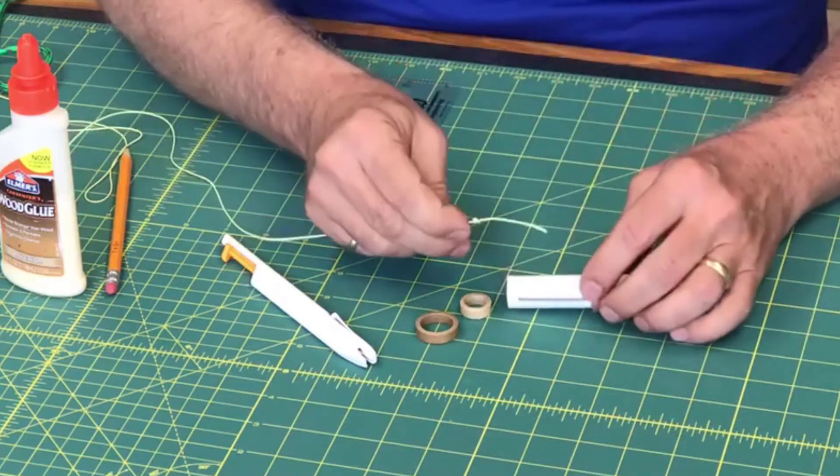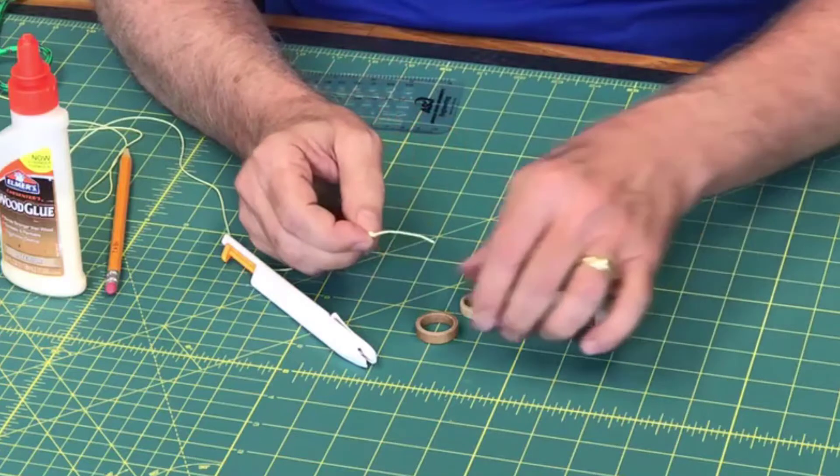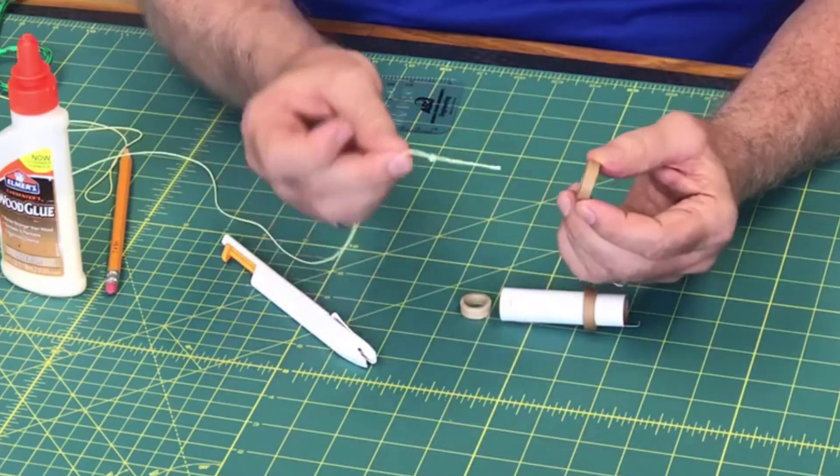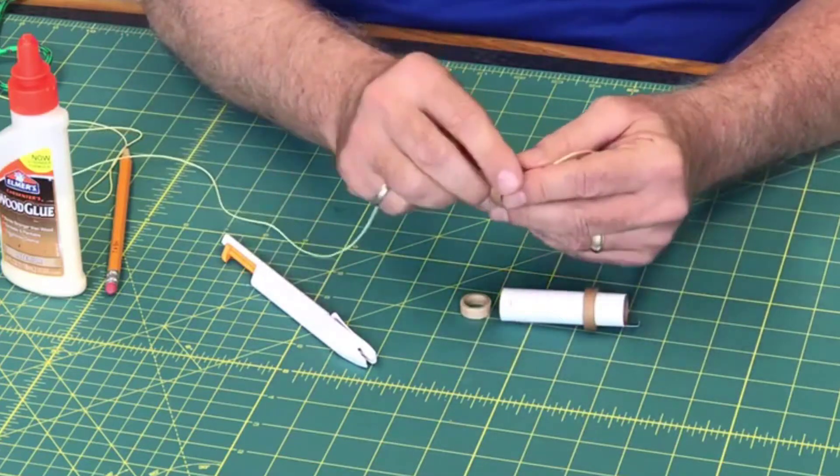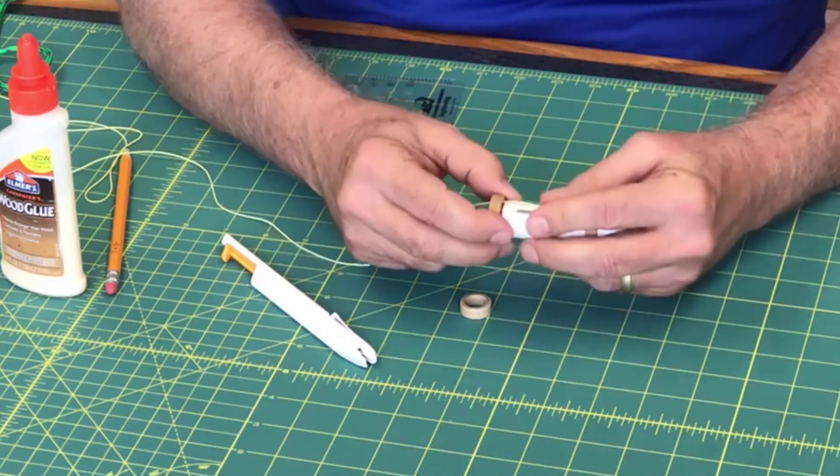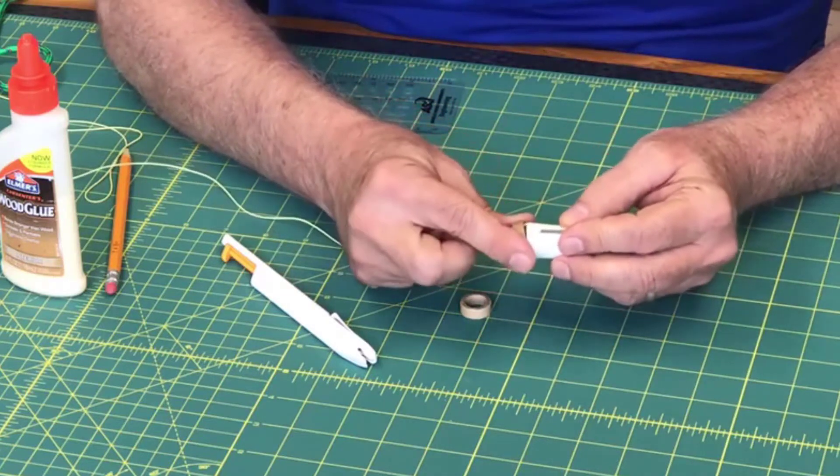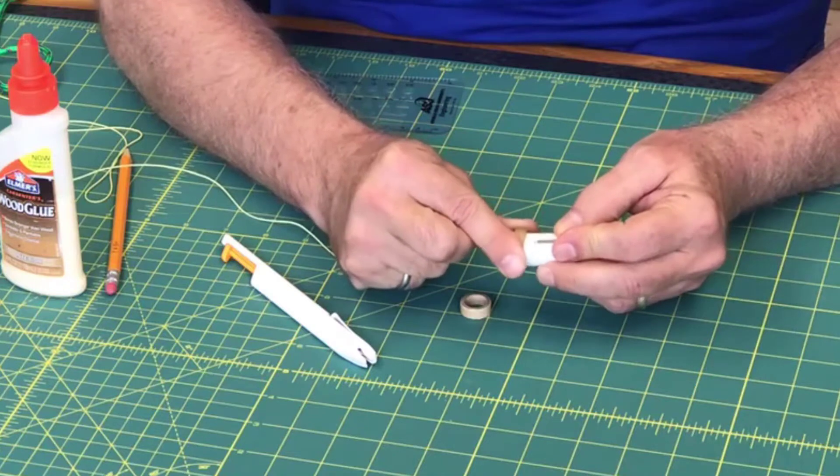So take your shock cord and take the short end where you tied the knot and put it through here. You can leave some extra there, it doesn't matter. And then this will be a little harder because you've got the shock cord in there.